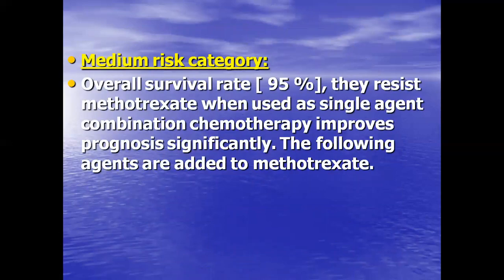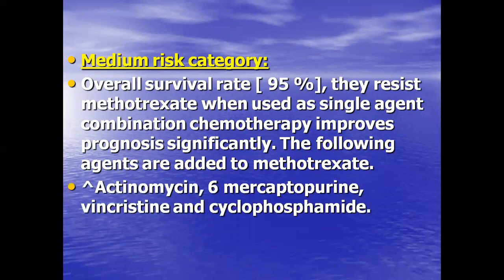For the medium risk category, the overall survivor rate is 95%. These patients resist methotrexate when used as a single agent. Combination chemotherapy significantly improves prognosis. The following agents are added to methotrexate: actinomycin D, 6-mercaptopurine, vincristine, and cyclophosphamide.